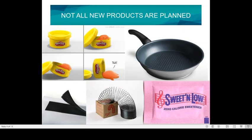Another accidental product is Slinky. This was also done accidentally — not planned — by a Navy engineer who figured out how to use a spring to keep sensitive instruments in ships from rocking themselves to death. He knocked this prototype off, and instead of crashing to the floor, it actually sprang downward and went up again. It was so exciting to see, and it became a toy for children, sold worldwide for millions and millions of dollars.